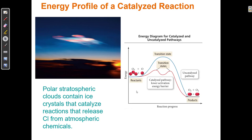Here's another example — actually the same example. The uncatalyzed reaction has a transition state that is very high energy with a very high activation energy. But the catalyzed pathway lowers the activation energy, and now it happens in two steps: we create an unstable intermediate, which then reproduces the catalyst, and that catalyst particle can break apart more and more ozone. That's why we had to stop releasing CFCs — chlorofluorocarbons — into the atmosphere, because we were destroying the ozone layer.